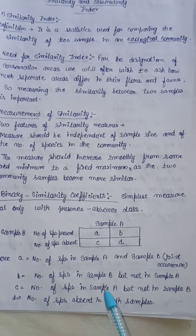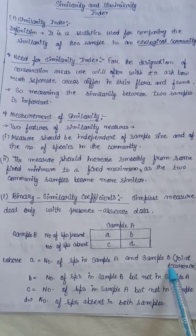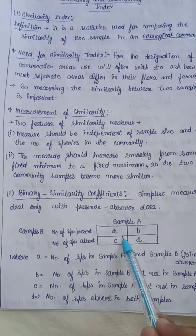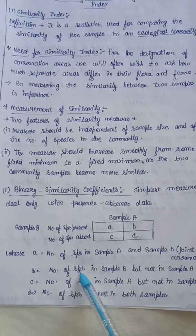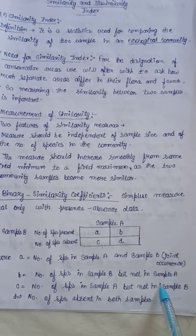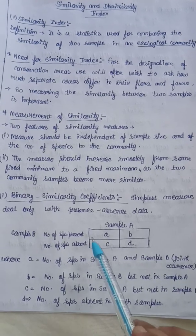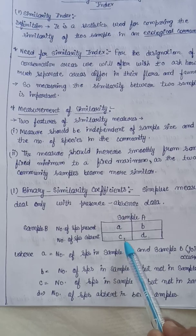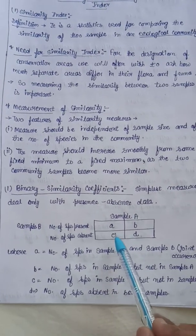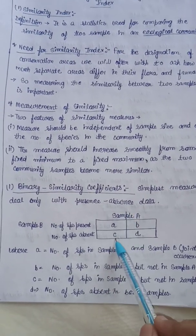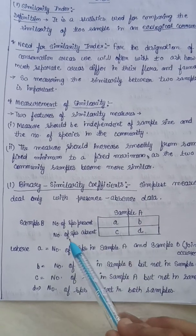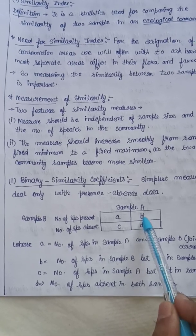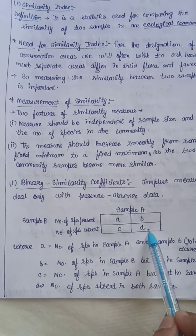Here, 'a' denotes the number of species present in both sample A and sample B — joint occurrence. 'b' denotes species present in sample B but not in sample A. 'c' denotes species present in sample A but not in sample B. And 'd' denotes species not present in either sample A or sample B.